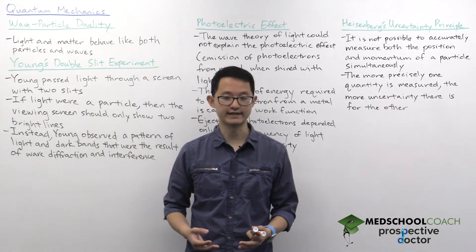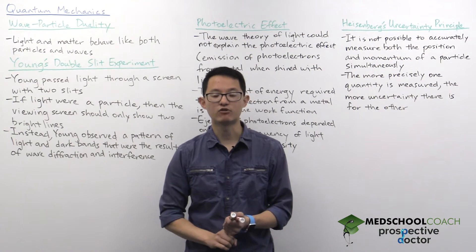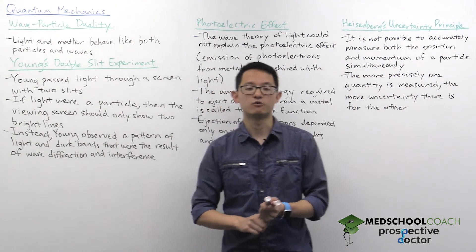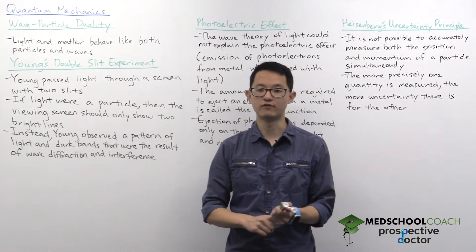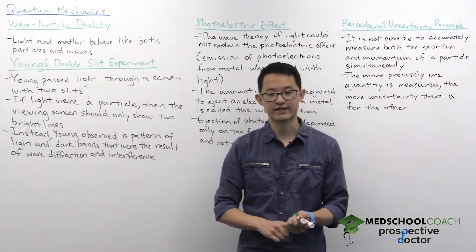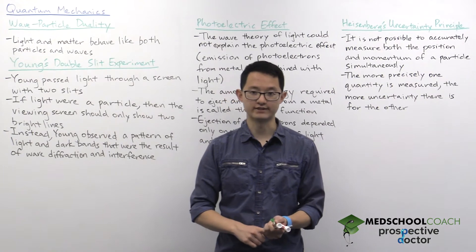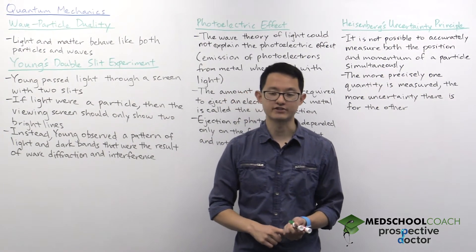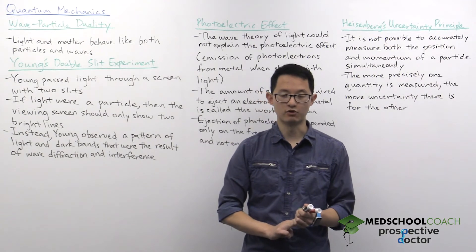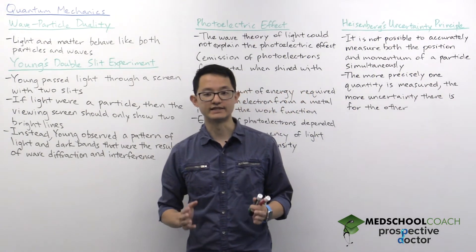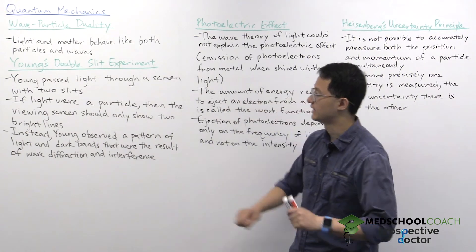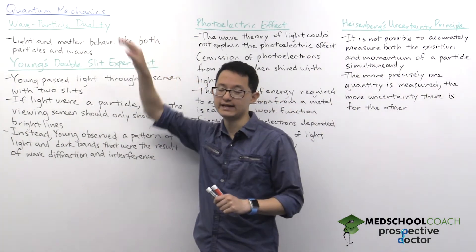Now there are three key aspects of quantum mechanics. The first is that many quantities, such as energy, are quantized. We saw an example of this looking at the Bohr model, where the energies of the different energy levels of an atom are quantized. The other two aspects are wave-particle duality and the uncertainty principle, both of which we'll discuss in this video.